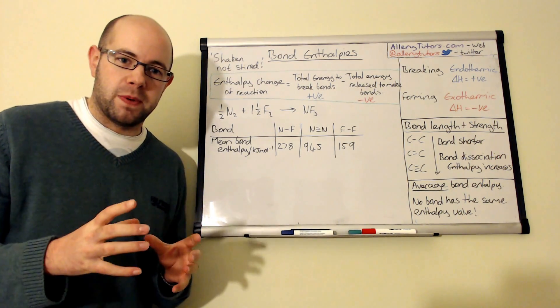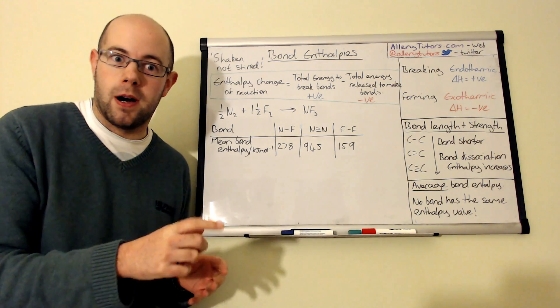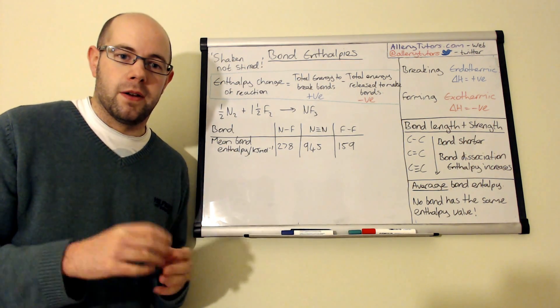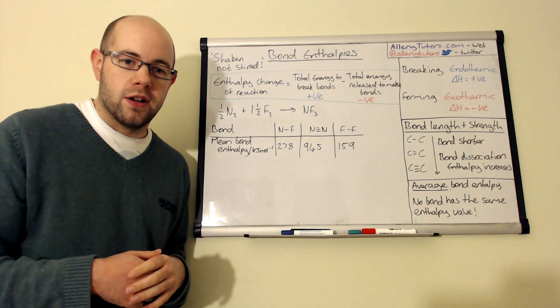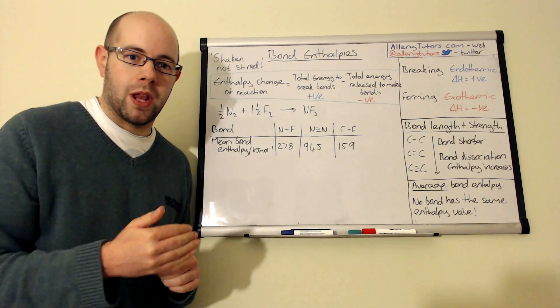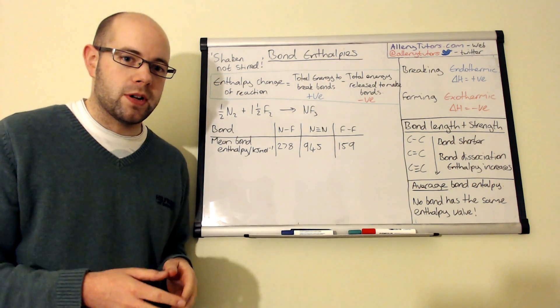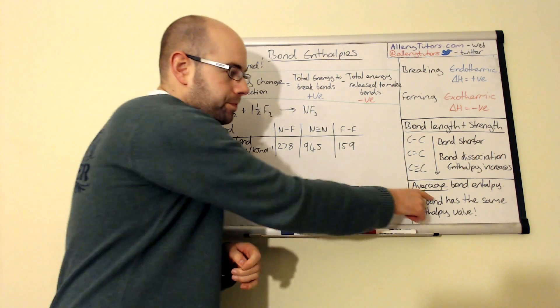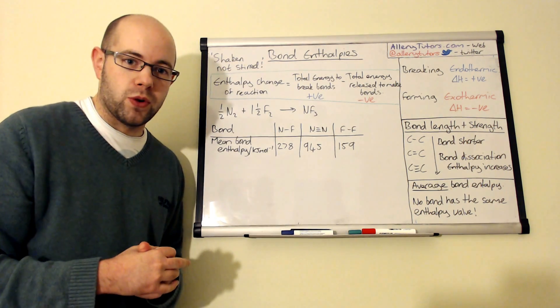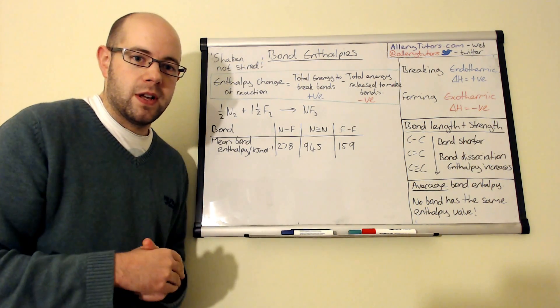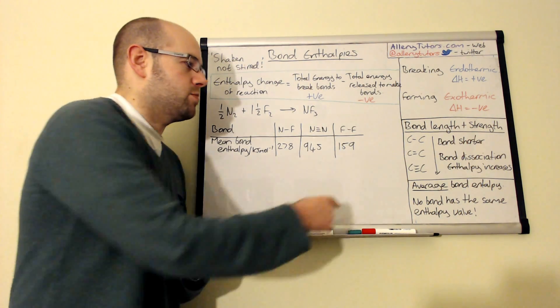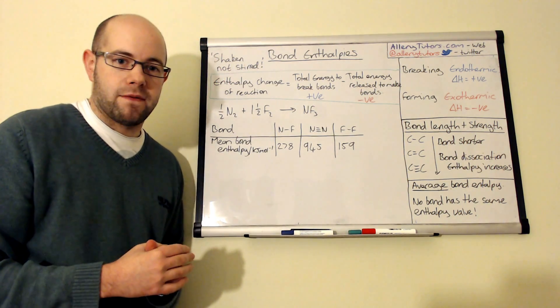Now because the bond enthalpies between carbons and other molecules and other atoms are different in other molecules, then we have to come up with what we call an average bond enthalpy. And this is the value that you would see in the data book, and is basically the average of all the enthalpies, or as many different bond enthalpies as we can, and we take an average and we call this an average bond enthalpy.